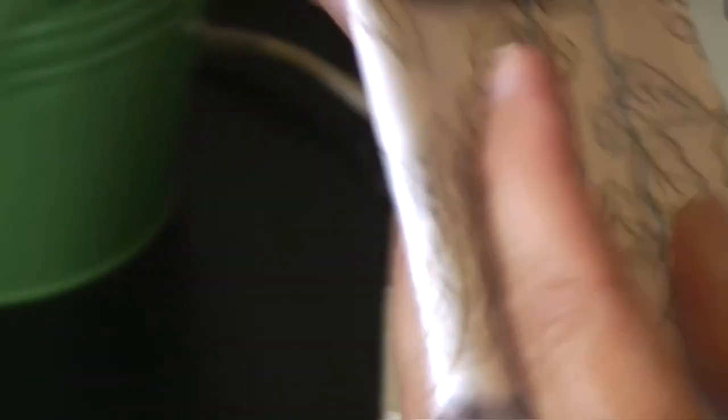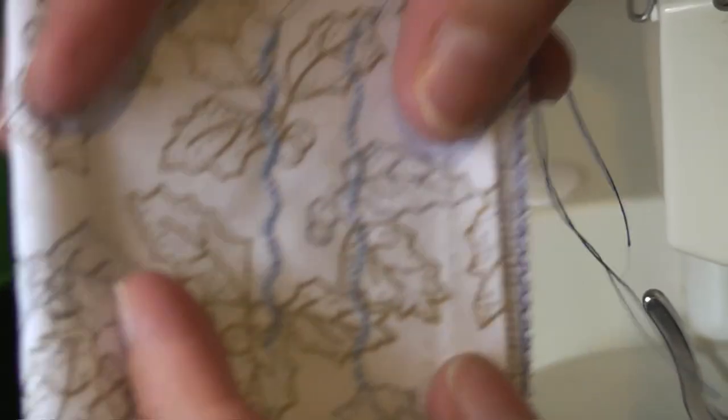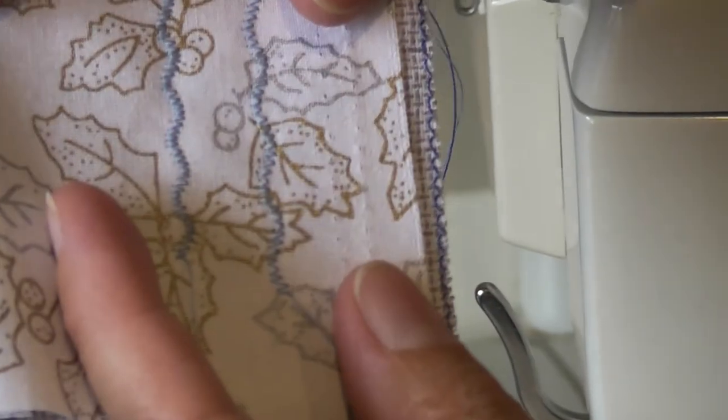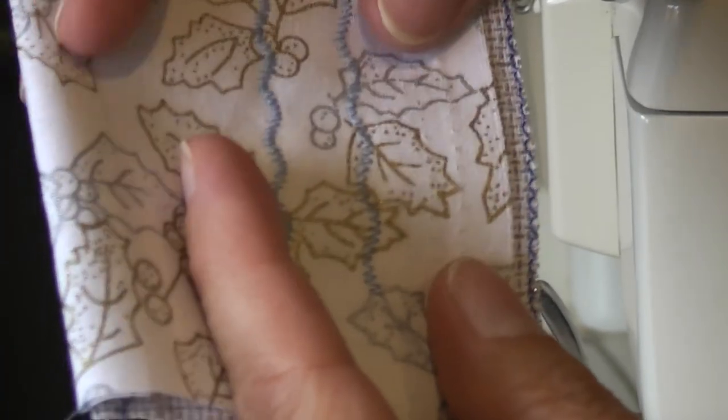So those are just some of the stitches we can do. But for now what I'd like you to do is to go away and practice just with your washi tape or painters tape. Practice getting those straight lines. Once you've got that, you can do anything.